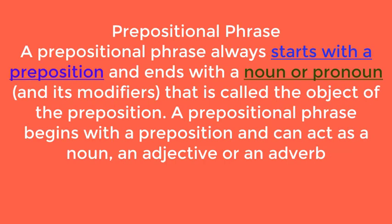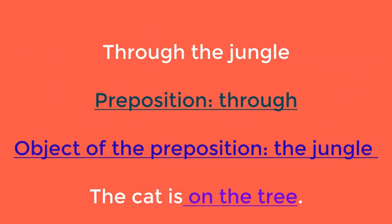Prepositional phrase. A prepositional phrase always starts with a preposition and ends with a noun or pronoun and its modifiers. That noun or pronoun is called the object of the preposition. Example: 'Through the jungle' — 'through' is the preposition and 'the jungle' is the object of the preposition. Another example: 'The cat is on the tree.'